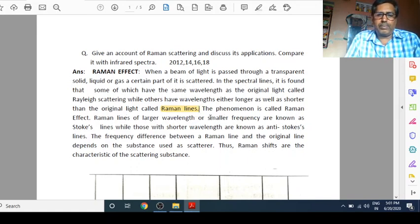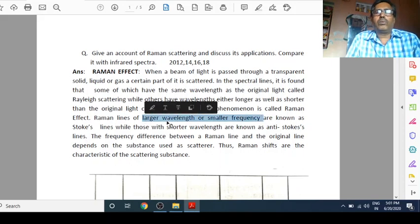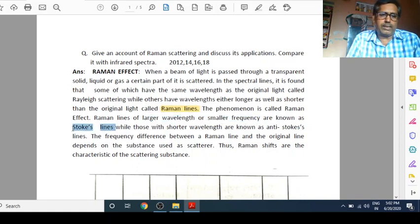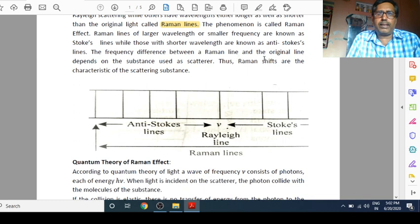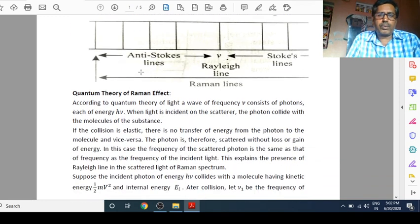Raman lines of larger wavelength or smaller frequency, you know that wavelength and frequency is inversely proportional, that is why I have written here larger wavelength means smaller frequency, known as Stokes lines. While those with shorter wavelength or larger frequency, known as anti-Stokes lines. The frequency difference between Raman line and the original line depends on the substance used as scatterer. Thus Raman shifts are the characteristics of scattering substance. From figure you can see, this is the Rayleigh line, which frequency is same to the original line. But here right side, Stokes line, left side anti-Stokes lines.